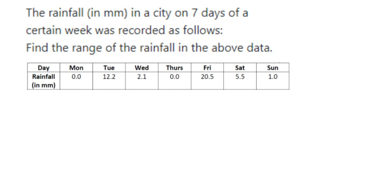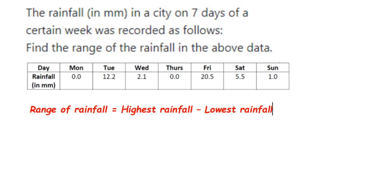Now what is range? Range is nothing but the highest value minus the lowest value. In this case, we have to find out the range of the rainfall in MM, so the formula will be: highest rainfall minus lowest rainfall.